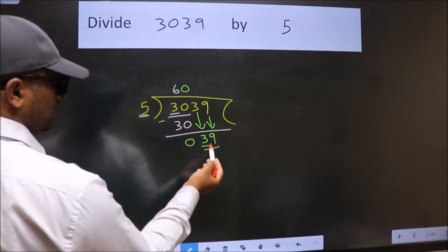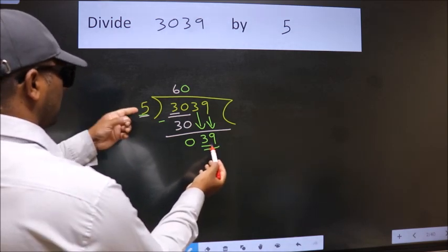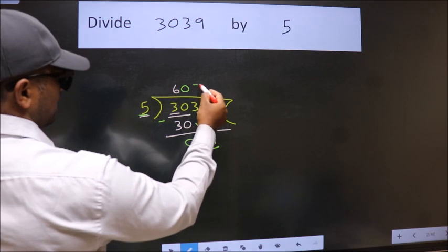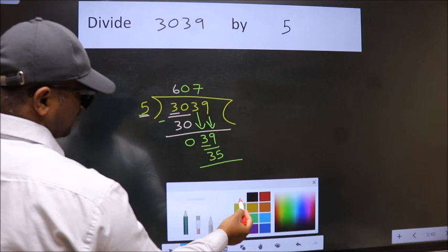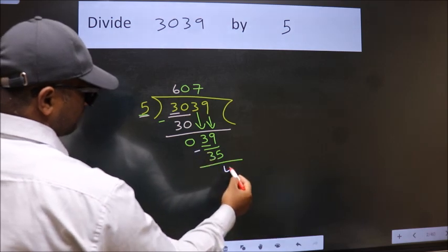So, 39. A number close to 39 in the 5 table is 5 times 7, which is 35. Now, we subtract. We get 4.